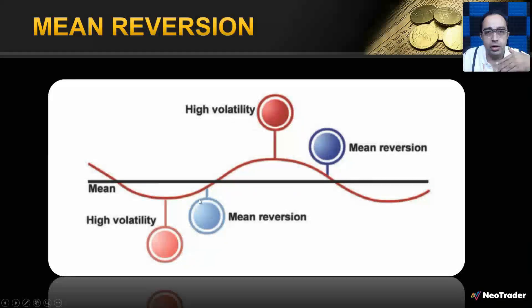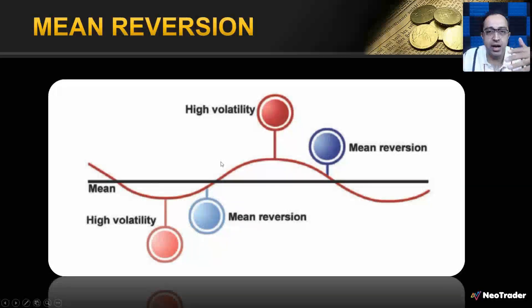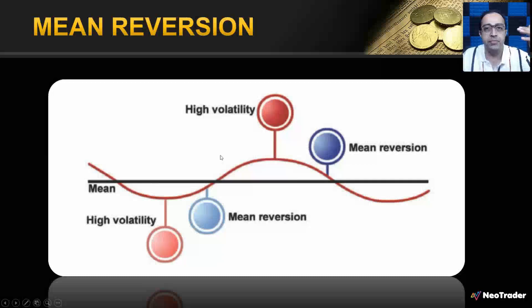These reversions happen when volatility becomes low, and prices move away when volatility becomes high. As you can see here, when there is a high amount of volatility, prices move away from their mean; when there is less volatility, prices come back to the mean.